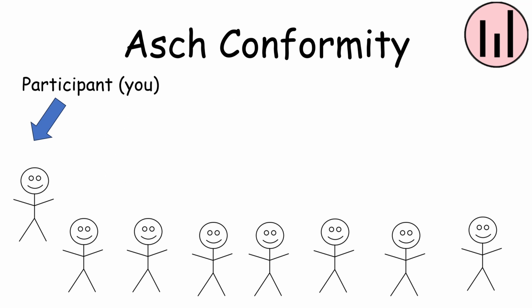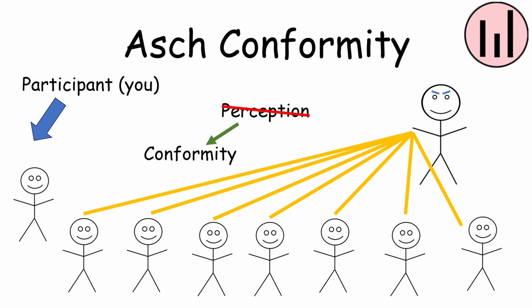This test was not made to measure perception. It was made to measure conformity. And the other participants were all working for the scientist. Turns out, over one third of the true subjects would go along with the group and also say C.